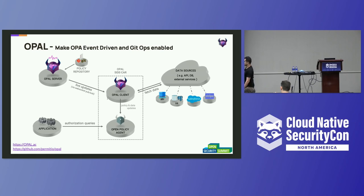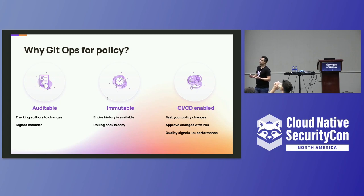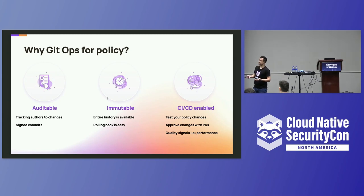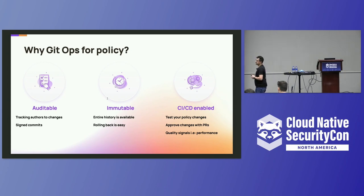OPAL gives you the ability to manage policy in Git — why is this so good? With GitOps for policy, your policy is auditable: you can see who made changes, who are the authors, you can use signed commits, and the entire history is available to you. It's immutable and rolling back is easy. It also gives you the power of CI/CD — you can have tests, you can have approvals with PRs, and for something sensitive you can have multiple approvals. You can have quality signals too: with OPA, some policies may not be as performant as others, so you can have a CI/CD signal that alerts you if a policy is too slow and would affect your app's SLA.